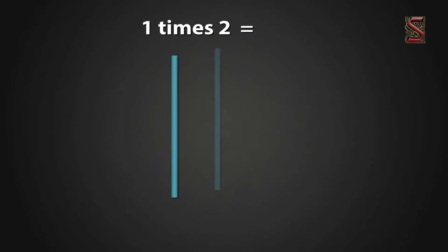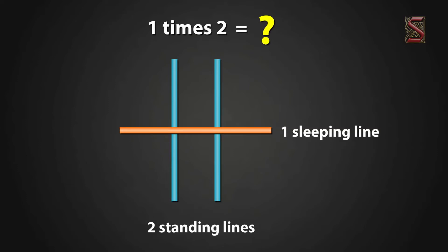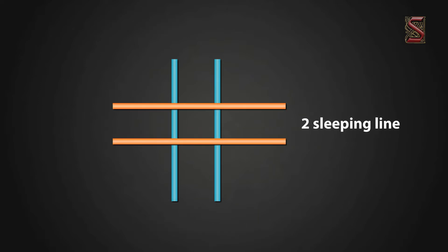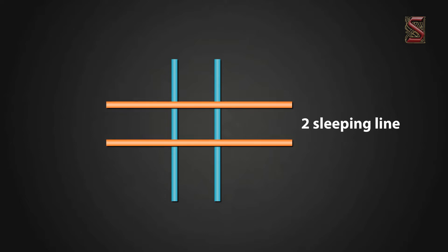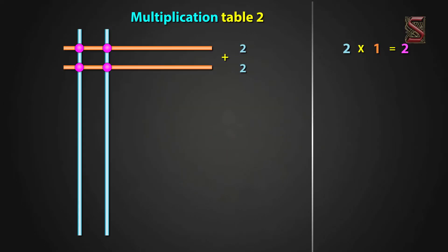Now, to find 2 one times, draw 1 sleeping line across these 2 standing lines like this. How many meeting points do we have here? 2 meeting points. So, 1 times 2 is 2. Now draw 2 sleeping lines. We see that these 2 sleeping lines meet the 2 standing lines at 4 points. This means 2 two times is equal to 4.